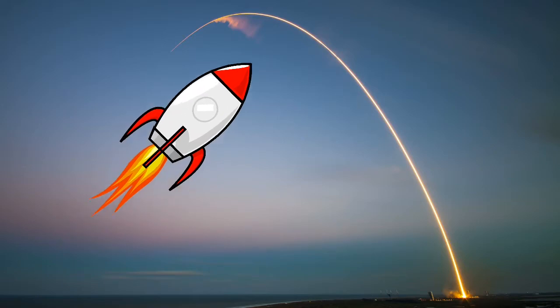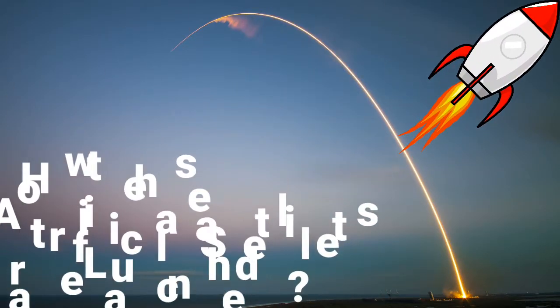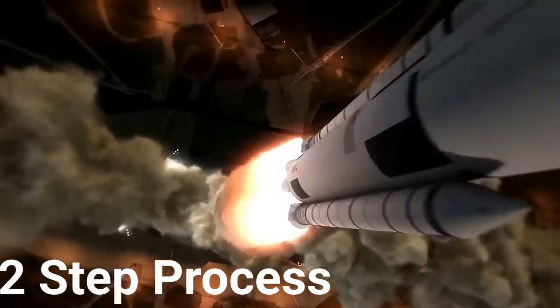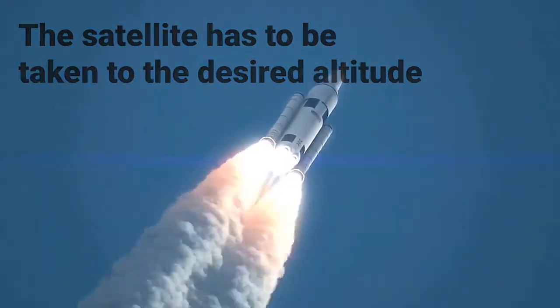Now let's talk about how these artificial satellites are launched. This is a tricky process. First, the satellite has to be taken to the desired altitude. Then, it has to be pushed off at the right momentum to begin and maintain its orbit.